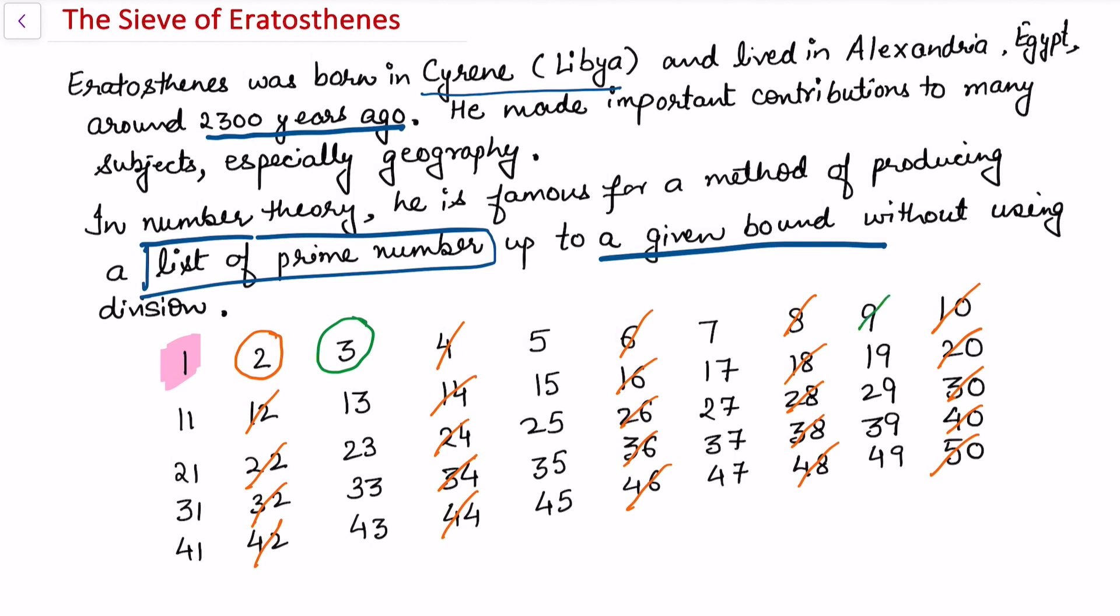Now select the next number, that is 5, and cross all the multiples of 5. So we can again look at continuation in the system and 25 is crossed off, we see 35 is crossed off. So cross all the multiples of 5 in this list.